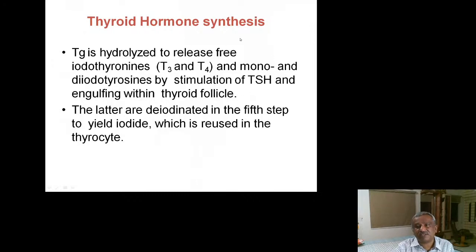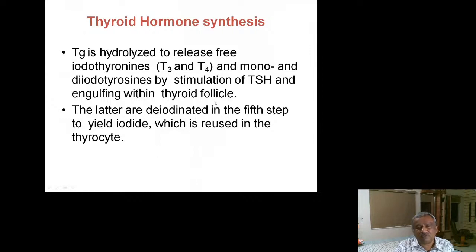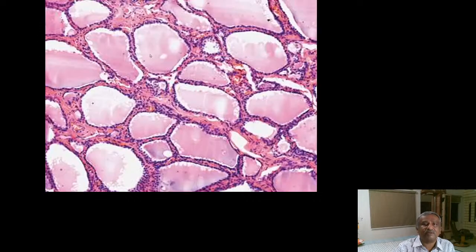Thyroglobulin is hydrolyzed to release free T3 and T4 by TSH stimulation within the thyroid follicle. Whenever the pituitary sends TSH, thyroglobulin is hydrolyzed and T3 and T4 are released. There is an entero-thyroid circulation of iodine — whatever iodine is released from T3 and T4 when they enter the bloodstream as free hormones is recycled back into the thyroid gland.